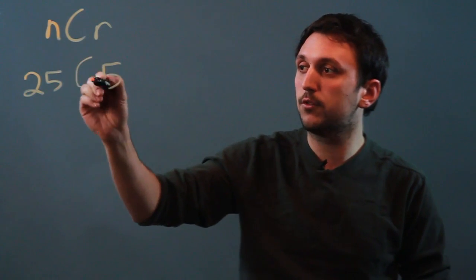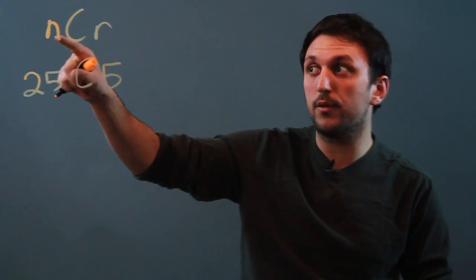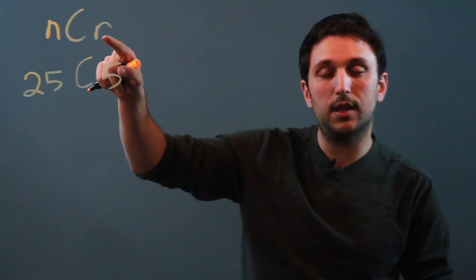So it's 25C5. When we have an N and an R, the N is the total choices, and the R is the things we have to choose.